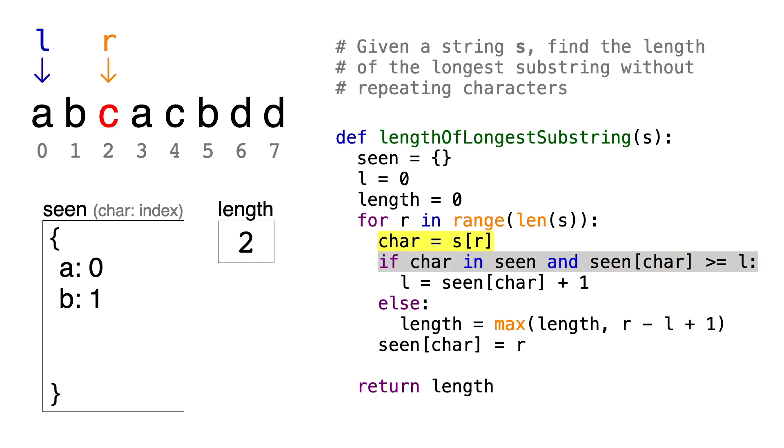The next letter is C, and it's the same thing. We can just add it to the substring, update the length to be 3, and record the index of C, which is 2.